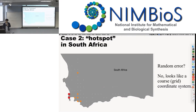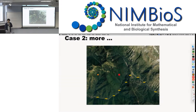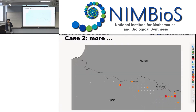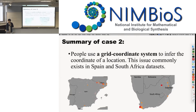A similar case happens in Spain. We look at two hotspots, and the text descriptions are mainly about the mountains or cities around them. But if we zoom out, we see the same pattern — they are also using a coarse-gridded coordinate system. That is the summary of case two.